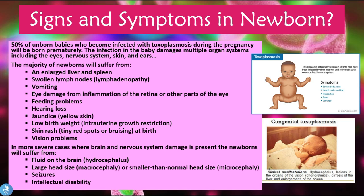Jaundice, which is the yellowing of the skin and mucosas, low birth weight due to intrauterine growth restriction during the infection, and skin rash presenting as tiny red spots or bruising at birth are also common. In more severe cases where brain and nervous system damage is present, newborns will suffer from fluid in the brain called hydrocephalus, a large head size called macrocephaly, or a smaller than normal head size called microcephaly. The baby may also suffer from seizures and intellectual disability.